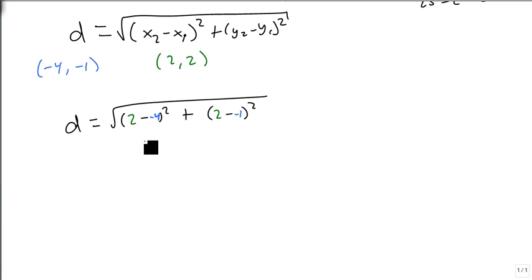And we recognize when we subtract a negative, that's the same as adding. So 2 minus a minus 4 is really 6, and 2 minus minus 1 is 2 plus 1, which is really a 3.